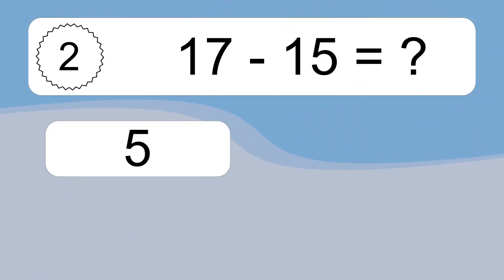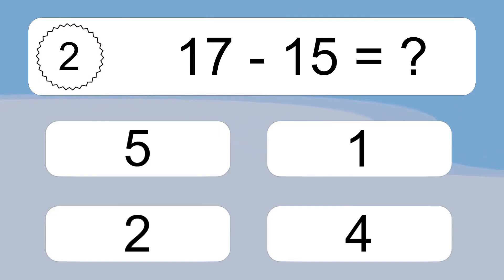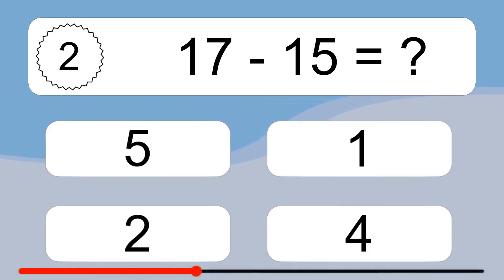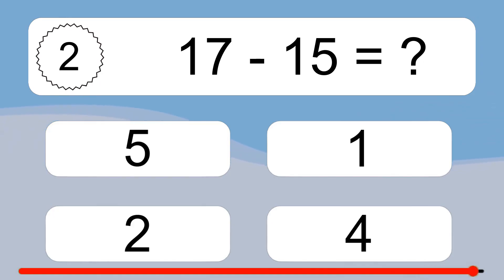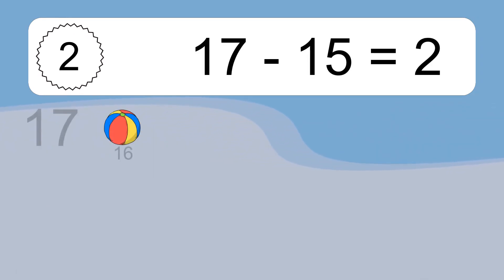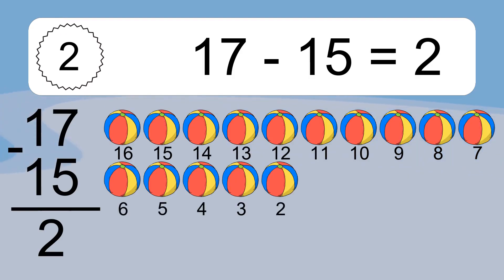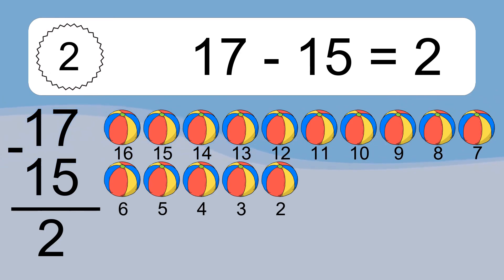17 minus 15 equals what? 17 minus 15 equals 2. Let's count it. 16, 15, 14, 13, 12, 11, 10, 9, 8, 7, 6, 5, 4, 3, 2.